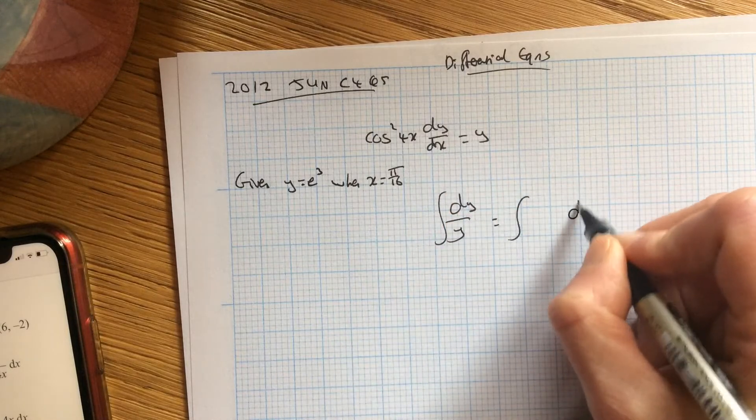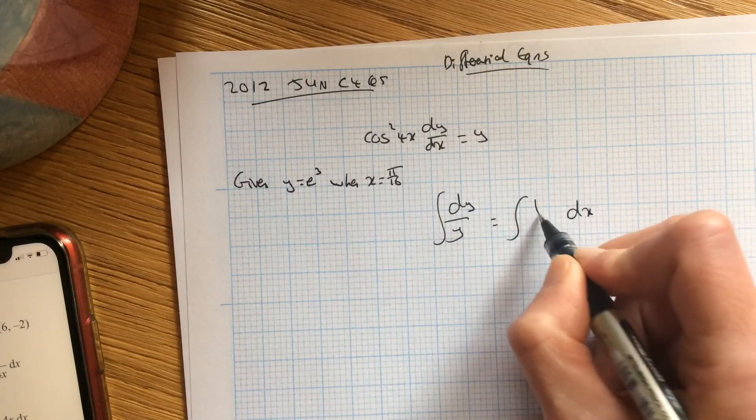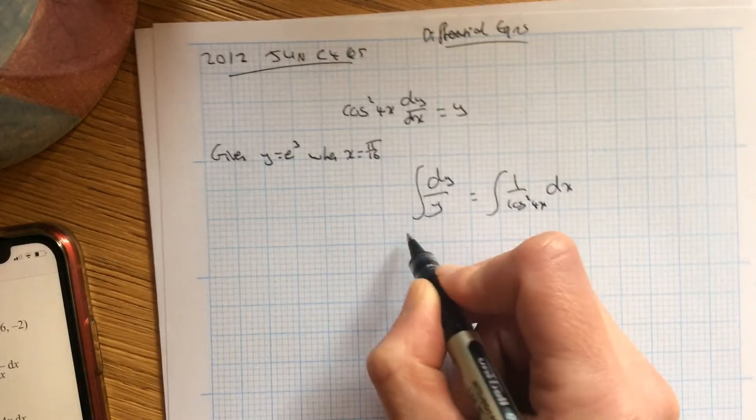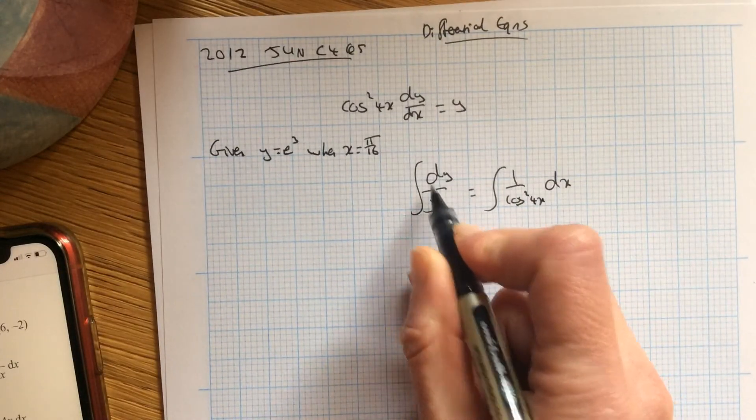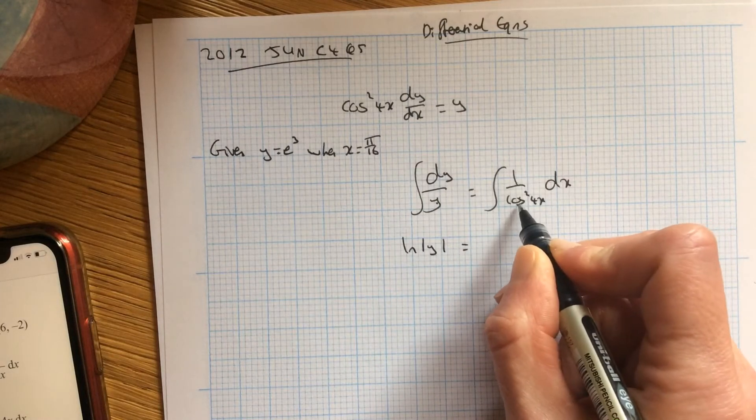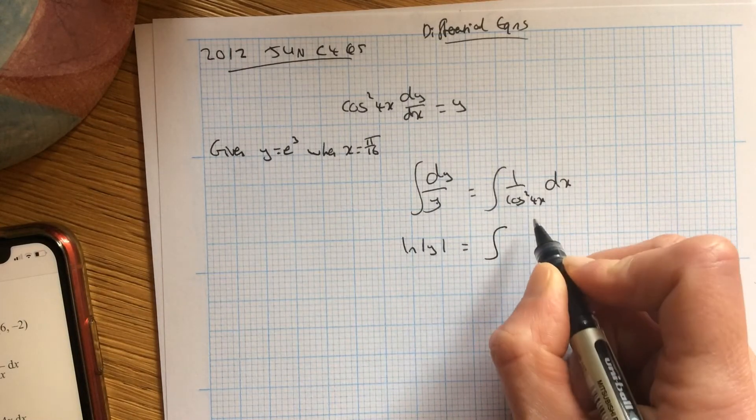So if you bring that dx over, it's in the top line, bring this 1 over cos squared 4x. Now, the derivative of the bottom is on the top, so you can just log the bottom.